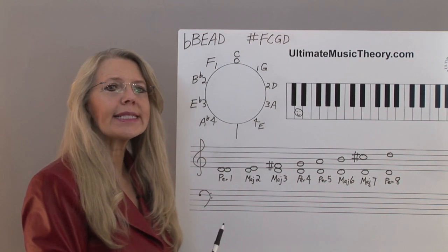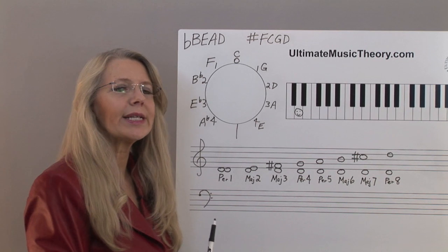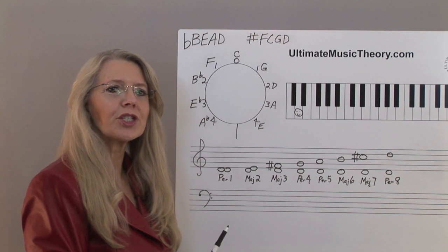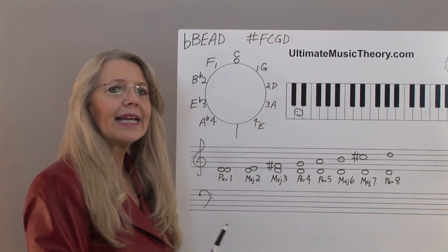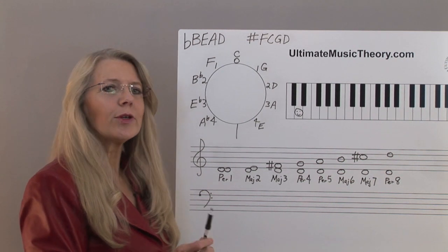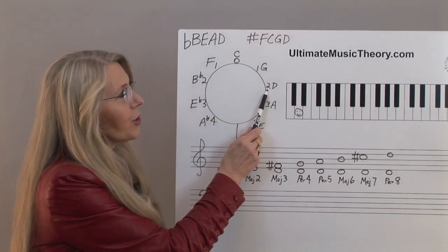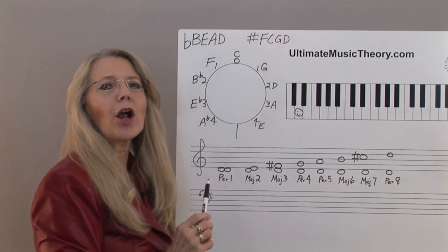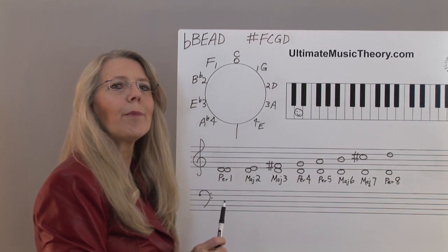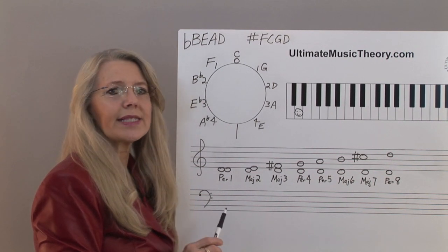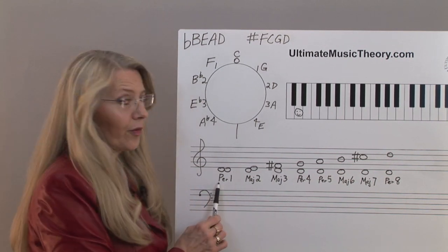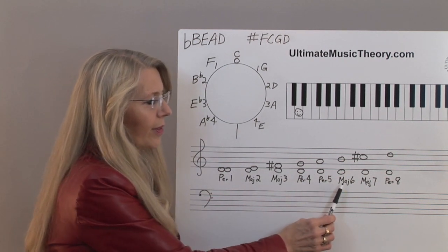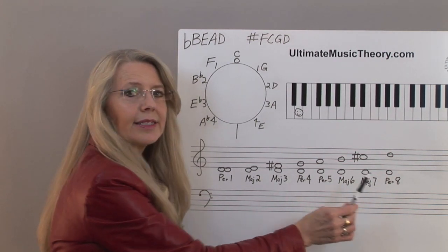When teaching intervals, always count from the lower note to the upper note to identify the interval number. Then teach students to identify the major key signature of the lower note, or the bottom note. In this example, the lower note is D. Use the circle of fifths to confirm the key signature for D major is two sharps — F sharp and C sharp. In this example we're using harmonic intervals. Each note of the D major scale is written above the tonic, the first note of the scale. These intervals are a perfect first, major second, major third, perfect fourth, perfect fifth, major sixth, major seventh, and a perfect eighth.